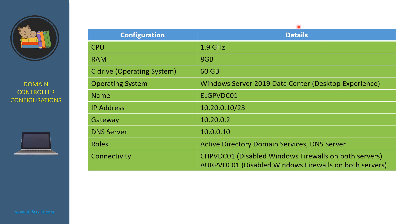This table shows us the configuration of the VM. As you can see, the RODC Active Directory Domain Services and DNS server has been installed. We also verify it has connectivity to GPVDC01 and LPVDC01.